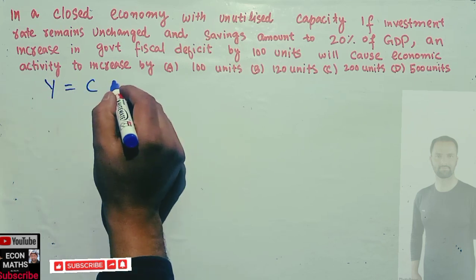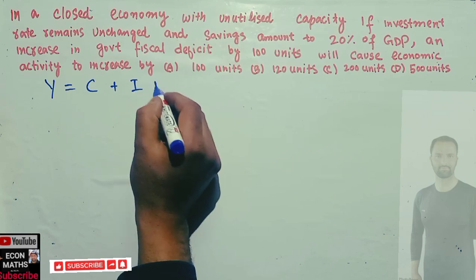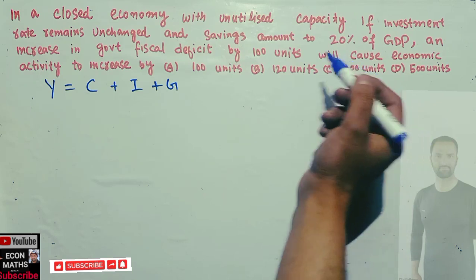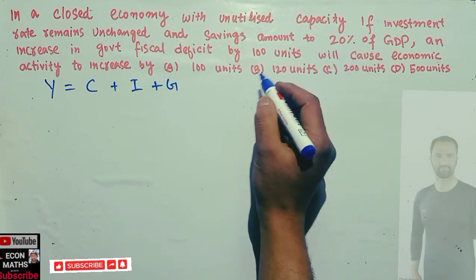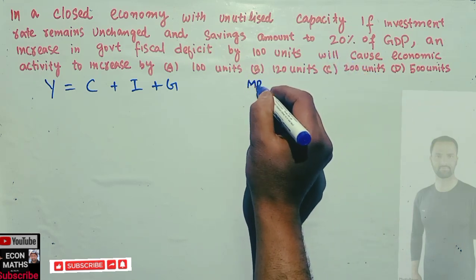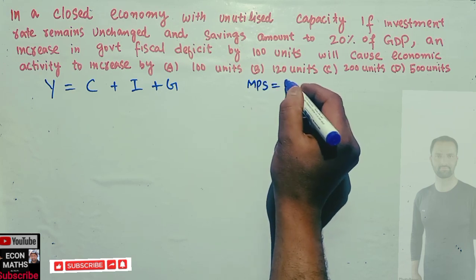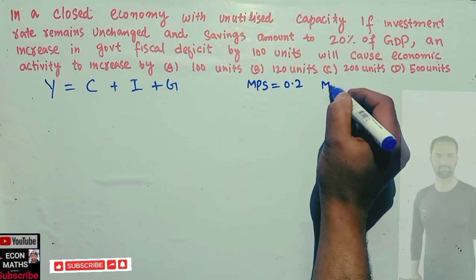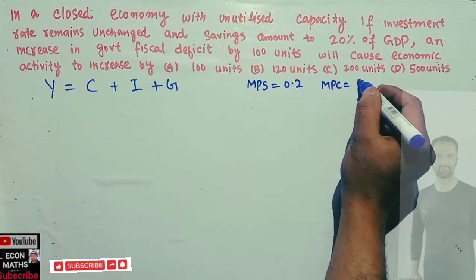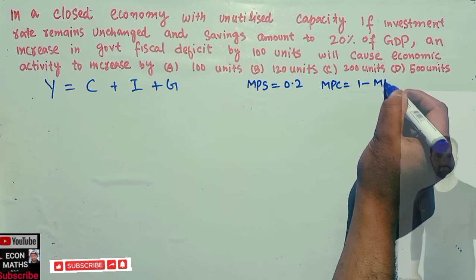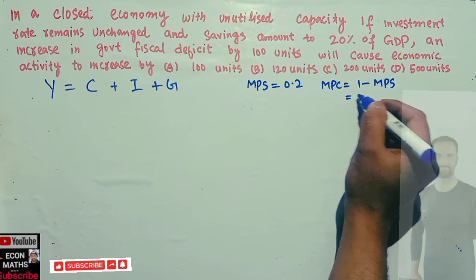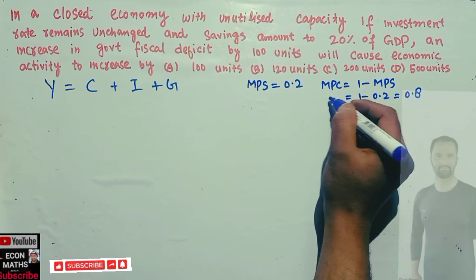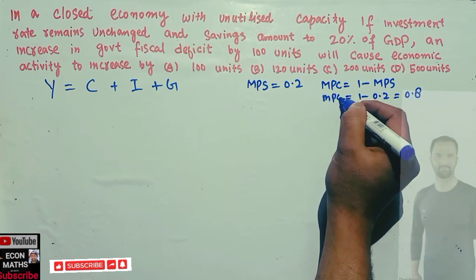We are told that the saving rate is 20% of GDP, which means our marginal propensity to save (MPS) is equal to 0.2. The marginal propensity to consume (MPC) is equal to 1 minus the marginal propensity to save, that is 1 minus 0.2, which gives us 0.8 as our marginal propensity to consume.